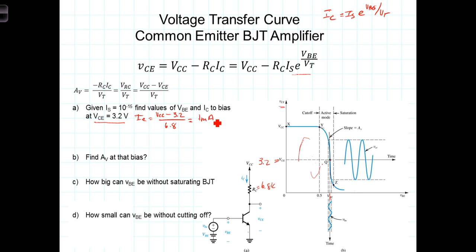We can determine the corresponding VBE bias by plugging in 1 milliamp. We're told that I sub S is 10 to the minus 15th. We can calculate VBE at the bias is equal to the thermal voltage V sub T times the natural log of 10 to the minus 3rd divided by 10 to the minus 15th.